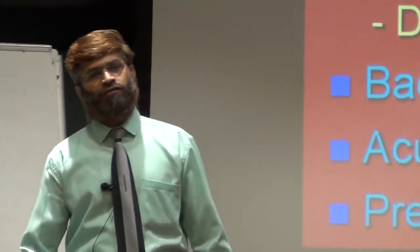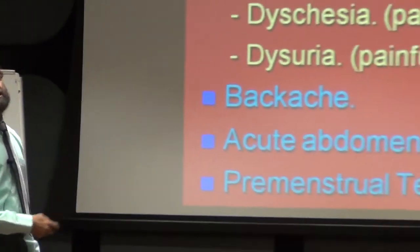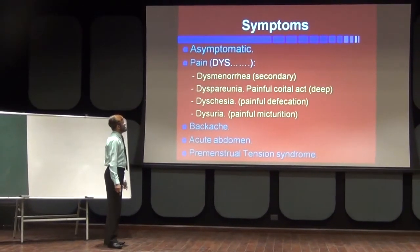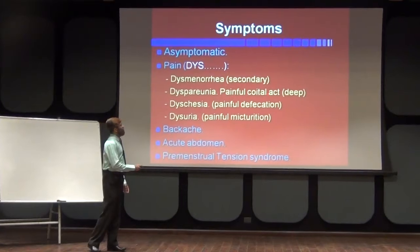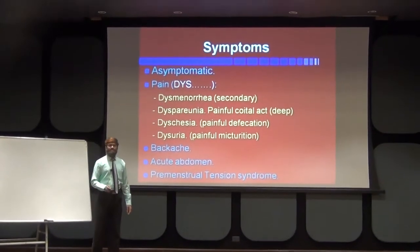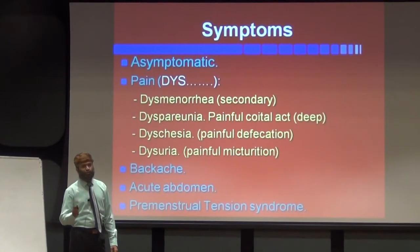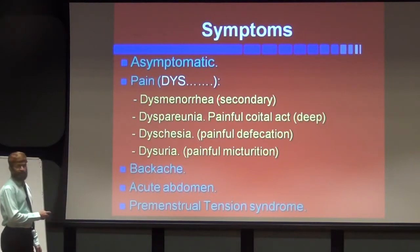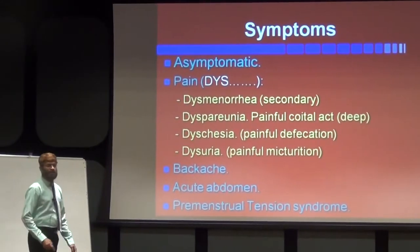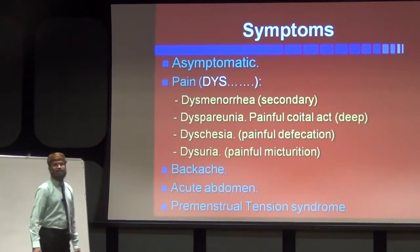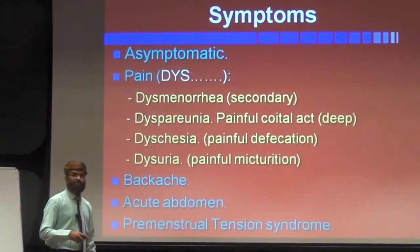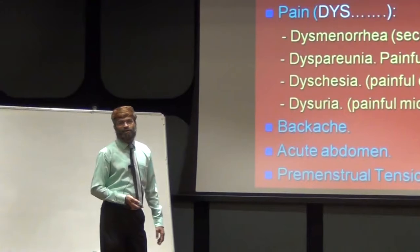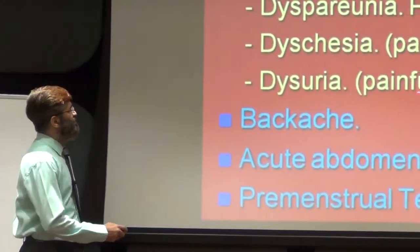The second symptom is dyspareunia — painful coitus — and in endometriosis it is deep dyspareunia, not superficial. There are other causes associated with the vulva and vagina for superficial dyspareunia; here the cause is deep, associated with the uterus or adnexal structures. The third pain is dyschezia — painful defecation — because the implants may involve the rectum. And if anterior involvement of the bladder or urethra occurs, it leads to dysuria, that is painful urination.